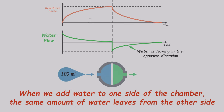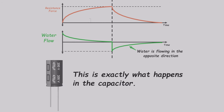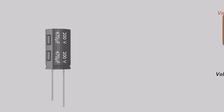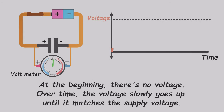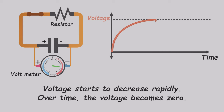This is how a capacitor works. When we connect a capacitor to a battery, at first the capacitor voltage is zero. Over time, the voltage gradually increases until it matches the supply voltage. If we disconnect the battery and connect the two ends of the capacitor through a resistor, the capacitor voltage starts to decrease quickly until it becomes zero.